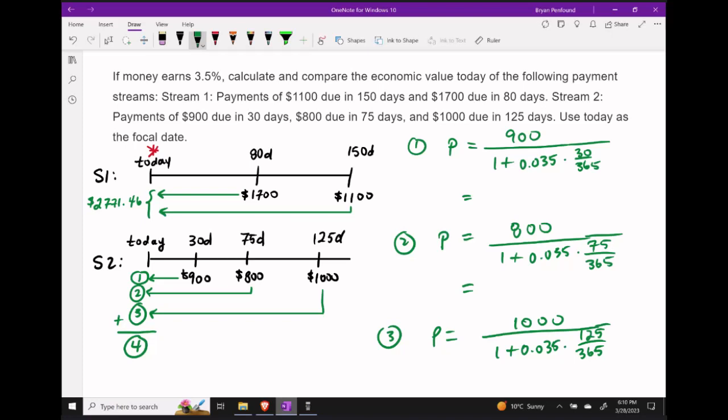All of our calculations are very similar to the two we just did, so let's do all three at the same time. For our first step, we take our $900 at the rate of 3.5% and our time step of 30 days out of 365. This gives a value of $897.42.